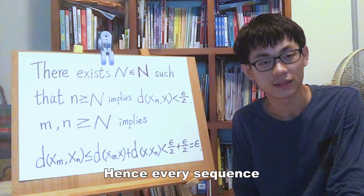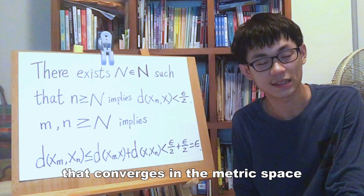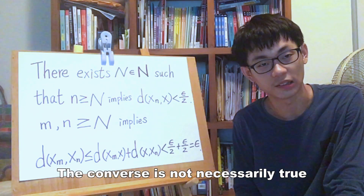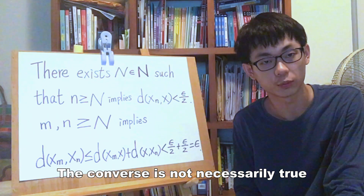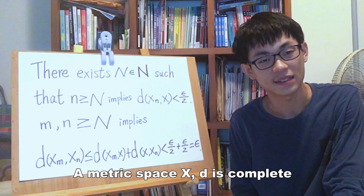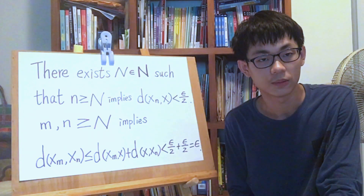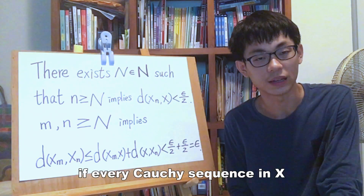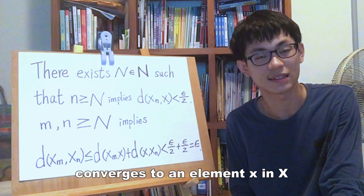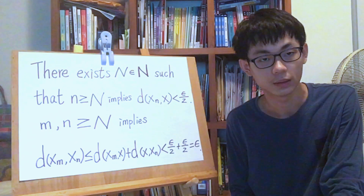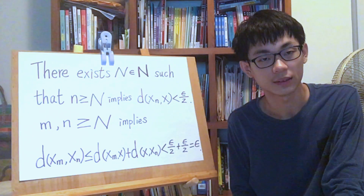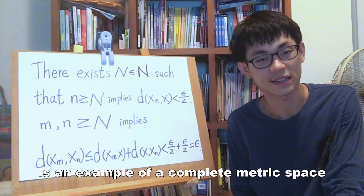Hence, every sequence that converges in a metric space is a Cauchy sequence. The converse is not necessarily true. The metric space (X, d) is complete if every Cauchy sequence in X converges to an element x in X. The real numbers with the usual metric is an example of a complete metric space.